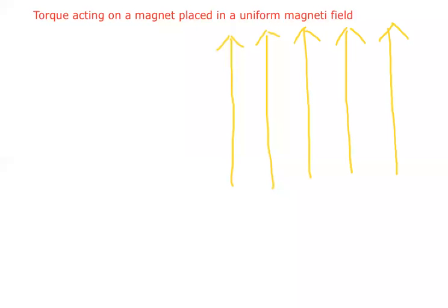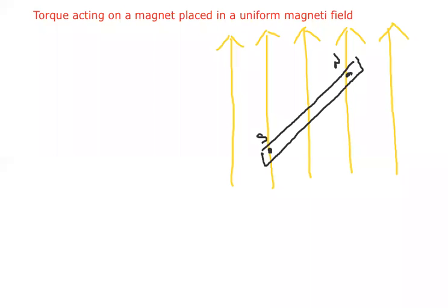I am taking the magnet and placing it in the uniform magnetic field. Here we have two poles: south pole and north pole. The magnet is making an angle theta with the direction of field. B-bar gives the direction of the magnetic field, and theta is the angle between the magnetic field and the magnet.